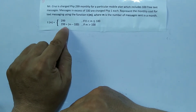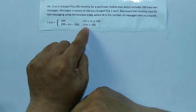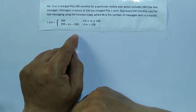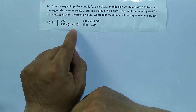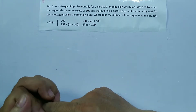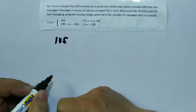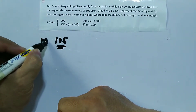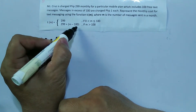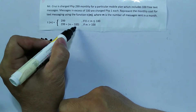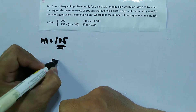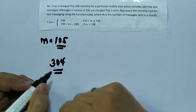The second sub-function is t(m) = 299 plus the quantity (m minus 100) if m is greater than 100, meaning for every message sent in excess of 100 you will be charged 1 peso plus the minimum cost of 299 pesos. For example, if your number of messages sent in a month is 105, the computation is: 105 minus 100 is 5, then 5 times 1 peso is 5 pesos plus 299, so the total cost is 304 pesos.